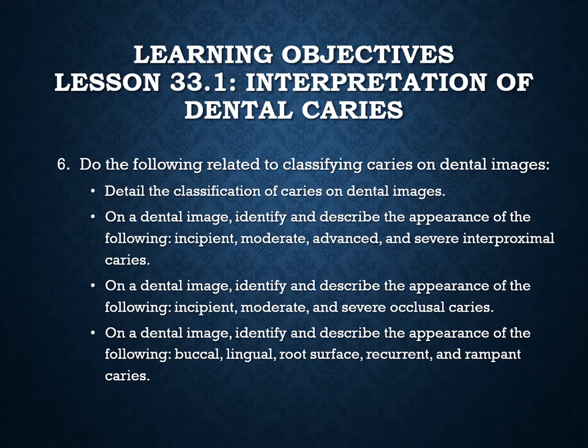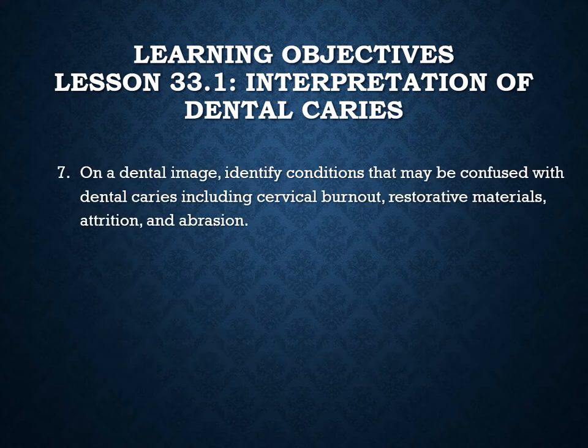We will discuss interpretation tips for evaluating caries on a dental image and the factors that may influence image interpretation. Related to classifying caries, we'll detail the classification on dental images and identify incipient, moderate, advanced, and severe interproximal caries; incipient, moderate, and severe occlusal caries; and buccal, lingual, root surface, recurrent, and rampant caries. We also need to identify conditions that may be confused with dental caries, including cervical burnout, restorative materials, attrition, and abrasion.